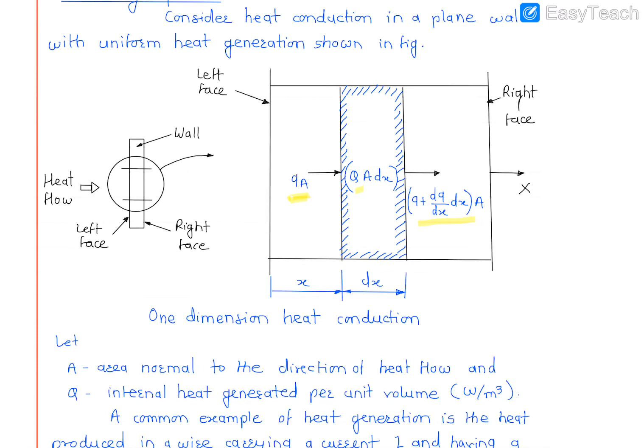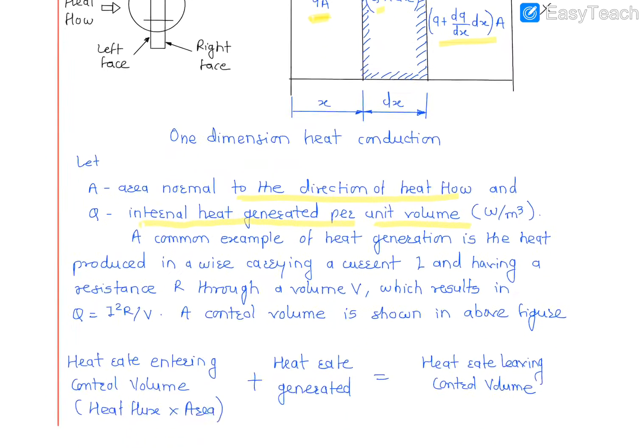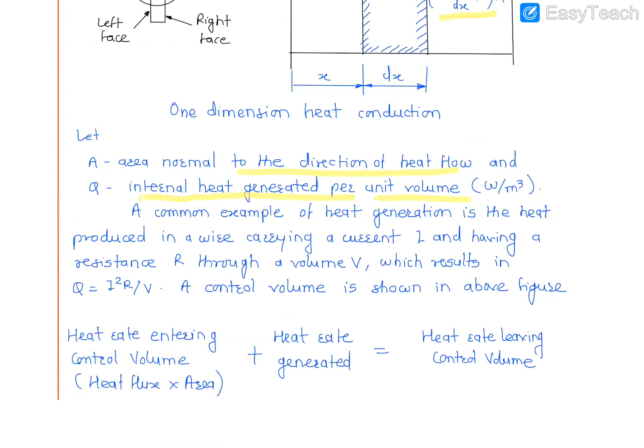In this case, let A be the area normal to the direction of heat flow, and Q is the internal heat generated per unit volume in watt per meter cube. Now we can write the equation.